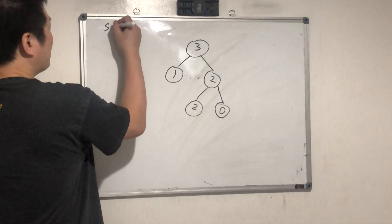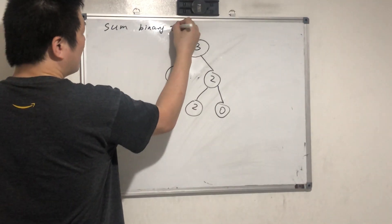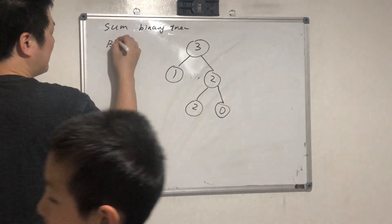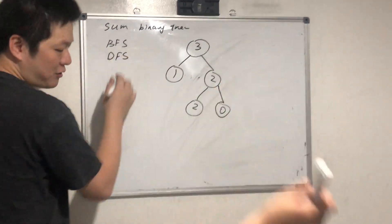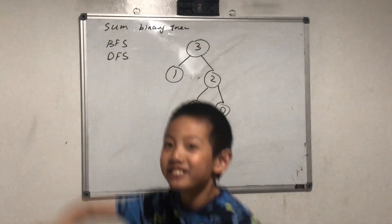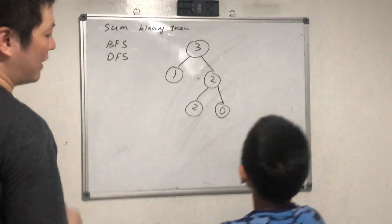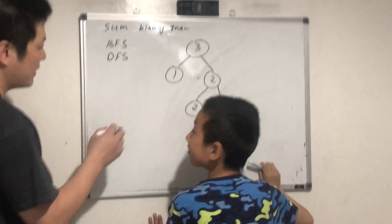Okay, so remind me, how many ways can we traverse a binary tree? BFS, okay, so we'll talk about BFS today. But what's BFS? Can you remind me? Three, one, two, two, zero. Okay, so level by level. And what's the depth-first search? Pre-order: three, one, two, two, zero.